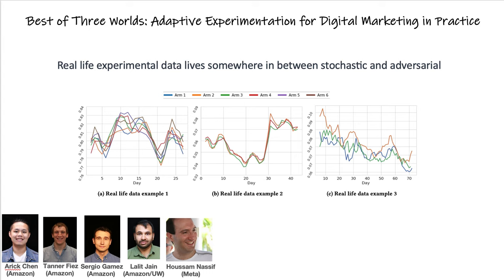The focus of our paper is on applying adaptive experimentation methods in production environments. We highlight that a key challenge to doing so is that real-life experimental data is not fully stochastic and instead it lives in between a stochastic and fully adversarial environment.